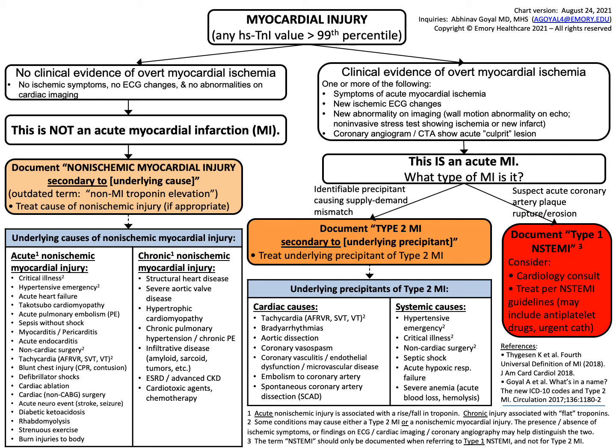This final slide shows how we classify and document patients with different types of myocardial injury and myocardial infarction — a separate talk will cover this in more detail. Once a patient has myocardial injury, meaning any troponin value above the 99th percentile, the key question is: is there clinical evidence of overt myocardial ischemia? If there are no ischemic symptoms, no ECG changes, and no abnormalities on cardiac imaging, we do not call it an acute MI — we call it non-ischemic myocardial injury and document the underlying cause. If there is evidence of overt myocardial ischemia — ischemic symptoms, ischemic ECG changes, abnormality on cardiac imaging, or an abnormal cardiac angiogram — then we call it acute MI.